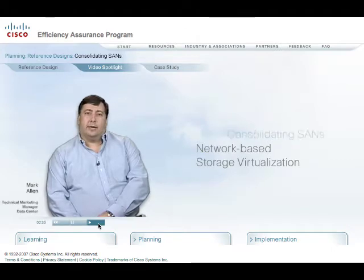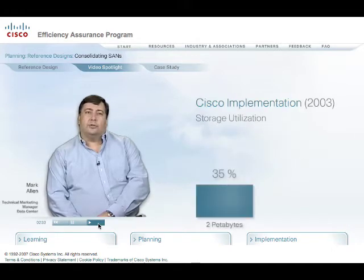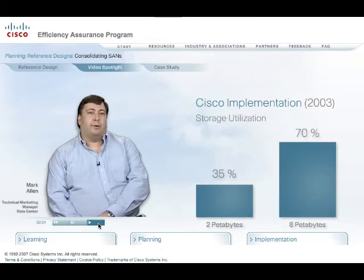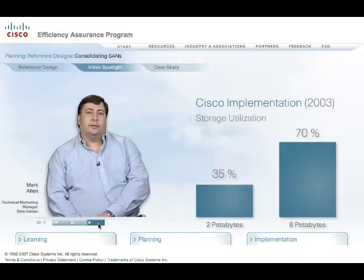In 2003, our average storage utilization was approximately 35% across 2 petabytes of storage. As we grew into approximately 8 petabytes of storage, we were able to increase our utilization to over 70%. This enabled us to decommission a number of underutilized storage arrays and reduce future storage expenditures.